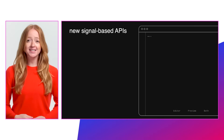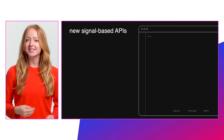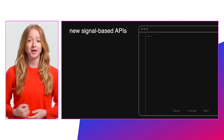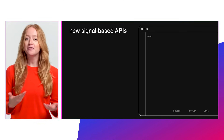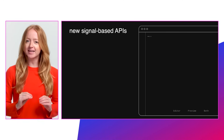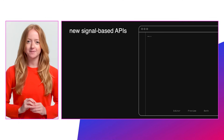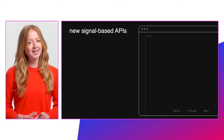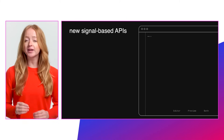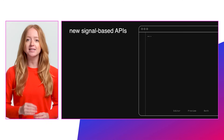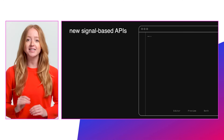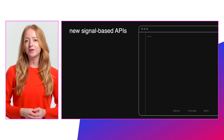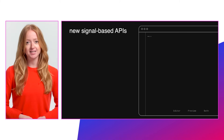Angular V18 is shipping with new APIs to further improve the developer experience in the framework. First up are our new signal-based APIs. In V17, we introduced Angular Signals, a system that granularly tracks how and where your state is used throughout an application, allowing the framework to optimize rendering updates.